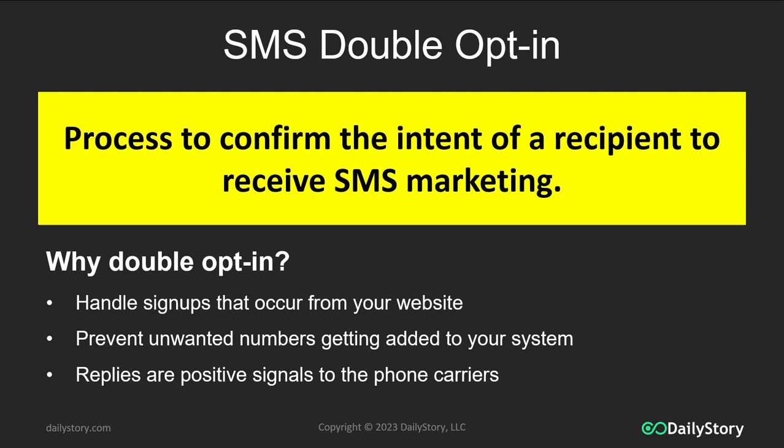So for example, if someone were to text a number and text the keyword "join", it's pretty easy to understand that the text coming in with that keyword is from a number that wants to be opted in. However, if you're using a web form or a pop-up or something else, you can't identify who is sending the message. The problem exists when Joe takes Ann's number and submits it in the pop-up, and now Ann is getting text messages that she didn't want to receive.